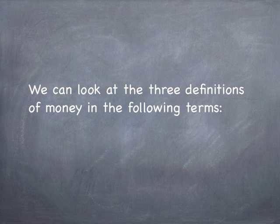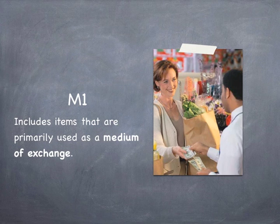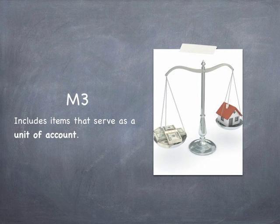We can look at the three definitions of money in the following terms. M1 includes items that are primarily used as a medium of exchange. M2 includes items that are used as a store of value. And M3 includes items that serve as a unit of account.